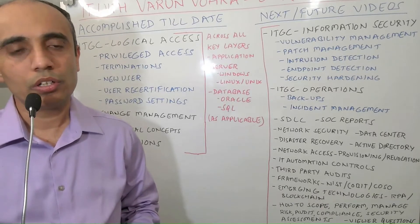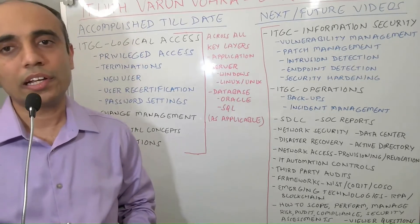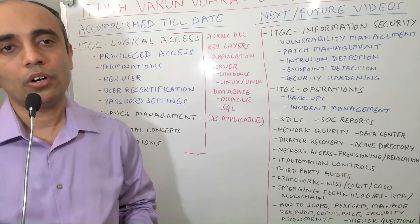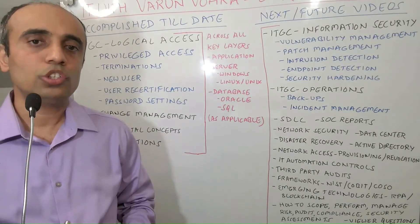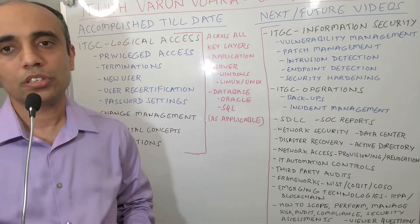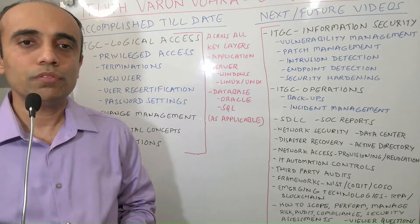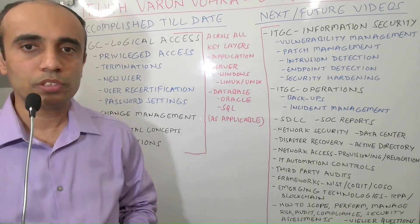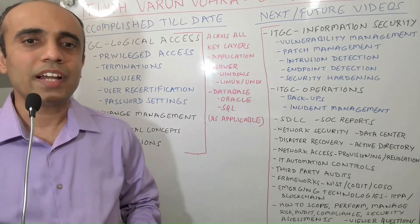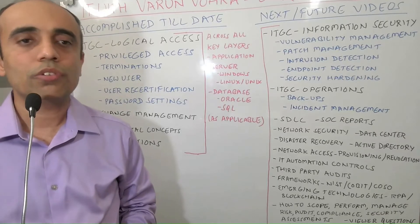We have so far covered all control areas under logical access and change management ITGC categories across all key layers: application, Windows server, Linux/Unix server, Oracle database, and SQL database. Logical access included five critical control areas: privileged access, terminations, new user, user recertification, and password settings. In addition, we have also covered various important fundamental concepts related to the ITGC framework and many viewer questions in separate videos. That has been our journey so far, also listed on the left hand side of the board.